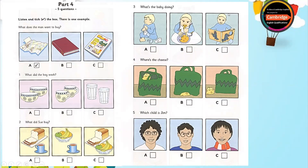Part 4. Look at the pictures. Listen and look. There is one example. What does the man want to buy? Good morning. Do you have maps in this shop? No, I'm sorry. We only have books and comics here. Try the shop down the road. You can buy them there, I think.